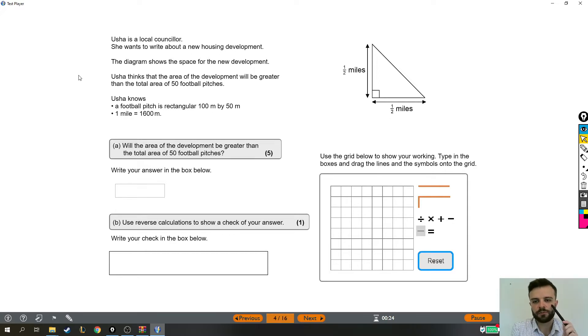Usher is a local counsellor. She wants to write about a new housing development. The diagram shows the space for the new development. You can see it's a triangle, half a mile high and half a mile wide.